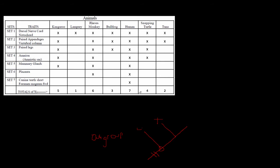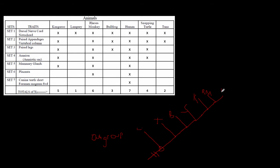Three is the bullfrog, so you branch there - there's the bullfrog - there's our branching event, and then this group continues on, and then we have the snapping turtle. So you have a branching event there, get the snapping turtle, and then you have the next one that has five - the kangaroo - so you continue on, branch, and that leads to the kangaroo. And then you continue on, branch there. This group continues, branches into the rhesus monkey, and finally ends with humans at the end there.